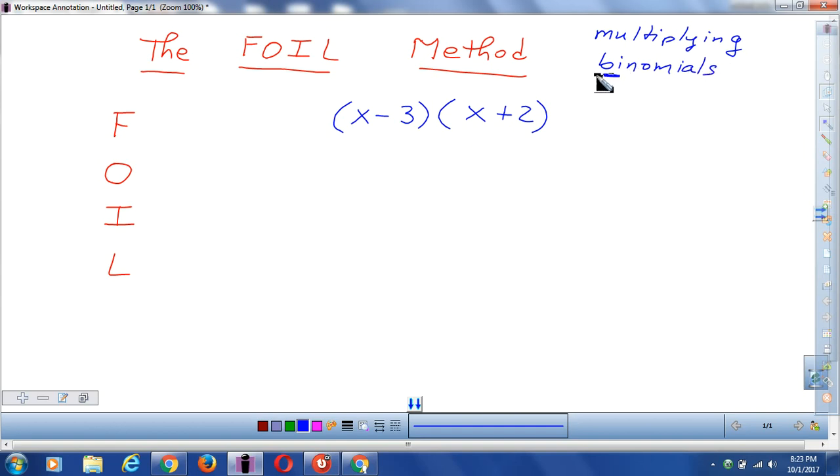And of course, bi means two, and nomial basically means pieces. So you can see that right here we have one piece, the x, and another piece, the negative three. So this is a binomial. And then we have here piece number one, the x, and piece number two, the positive two. So this is also a binomial, two pieces.